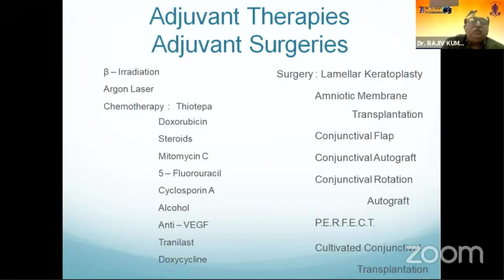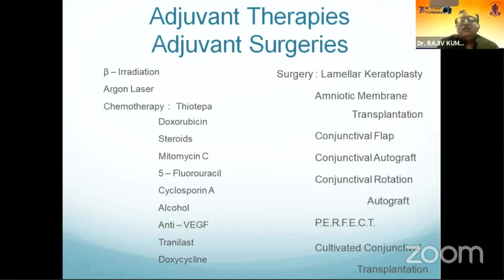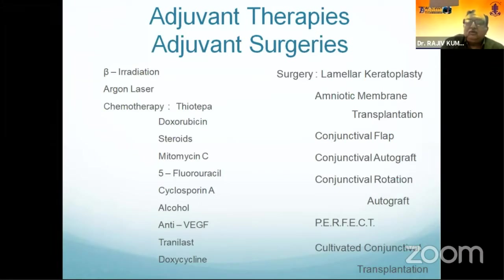Various treatment modalities have been adopted to reduce recurrence, including changes in surgical technique and adjuvant therapies. Adjuvants include beta radiation, argon laser, chemotherapy agents such as thiotepa, steroids, mitomycin C, 5-fluorouracil, cyclosporine A, anti-VEGF, and doxycycline. Surgical technique modifications include lamellar keratoplasty, amniotic membrane transplantation, conjunctival flap, conjunctival autograft, conjunctival rotation graft, and cultivated conjunctival transplantation.